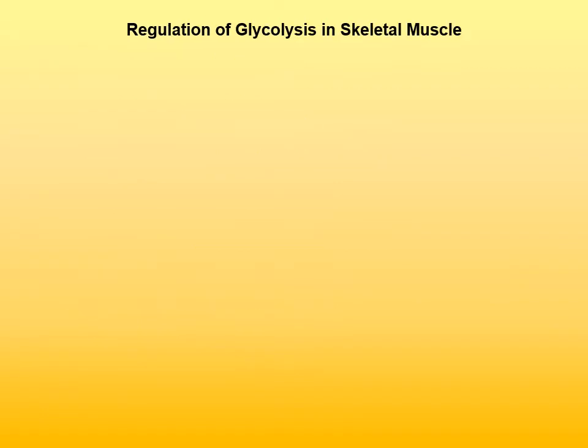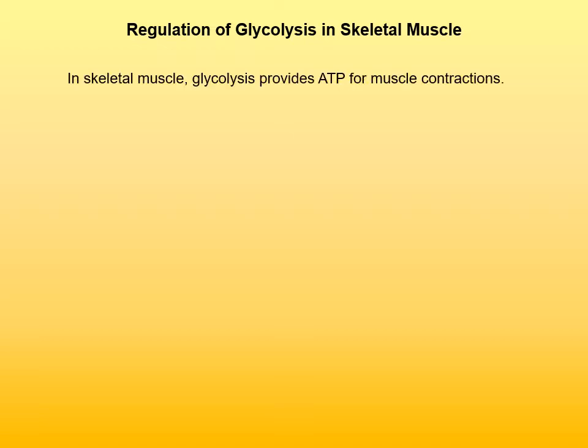How is glycolysis regulated? That depends on whether glycolysis occurs in the skeletal muscle or in the liver. In the skeletal muscle, glycolysis provides ATP or energy for muscle contractions. In the liver, the purpose of glycolysis is to provide glucose to maintain normal blood levels of glucose. Since those two roles are rather different, regulation is somewhat different. So first we'll look at regulation of glycolysis in the skeletal muscle.